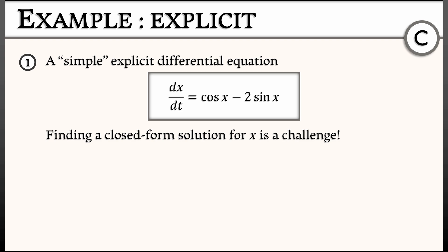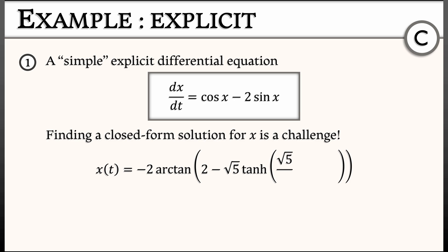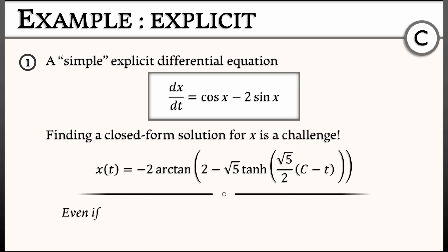I'm going to be nice to you. I'm going to tell you what the solution is. I claim that x as a function of t equals negative 2 times arctangent of the quantity 2 minus square root of 5, times the hyperbolic tangent of the quantity root 5 over 2 times the quantity of constant c minus t. You could plug that in and check that it solves that differential equation. I'll wait. Where did that come from? How did I get that? It took quite a few tricks to get that one to work out.